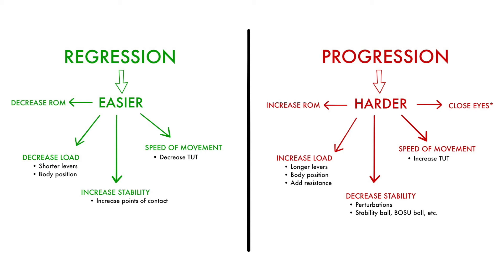An exercise regression is simply an approach to decrease the demand of a movement, or in other words, make it easier. Conversely, a progression does the exact opposite by increasing the demand, making it harder.